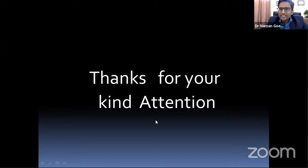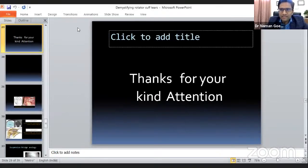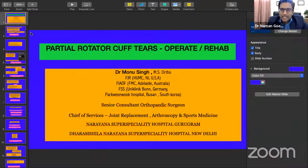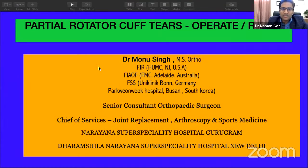Our next speaker is Dr. Monu Singh, Chief of Services for Joint Replacement, Arthroscopy and Sports Medicine, with over 20 years of experience. He will address the big question in every shoulder surgeon's mind: when we encounter a partial tear, how do we decide when to repair and when to rehab?